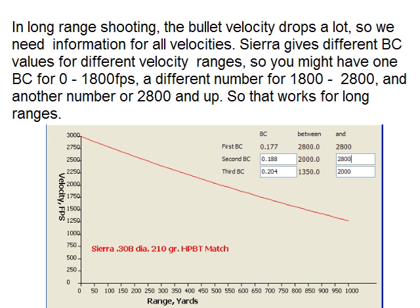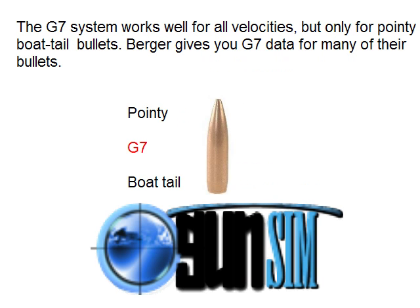There is another system called G7, which works for all velocities, but it only works for one shape of bullet — a pointy boattail, like the one in the picture. Luckily, long-range shooters tend to use pointy boattails, so if you're doing long-range shooting, you can get Berger bullets and use the G7 system, and then you've only got one BC number to deal with to any distance. That concludes my briefing — thanks for listening.